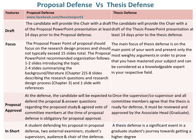The proposal PowerPoint recommended organisation follows: 1–2 slides introducing the topic; 2–4 slides summarising the background or literature (Chapter 2); 5–8 slides describing the research questions and research design process (Chapter 3); and 1 slide with references.